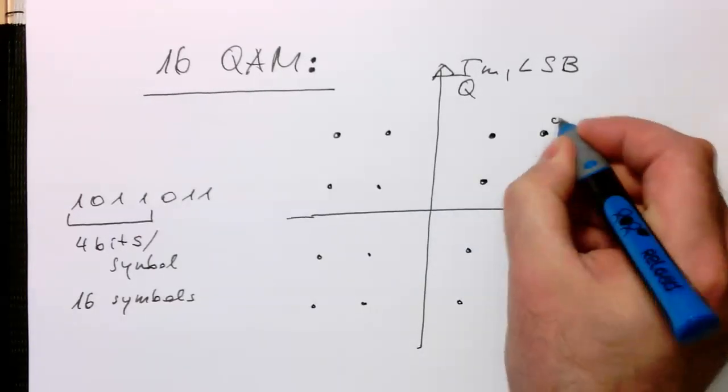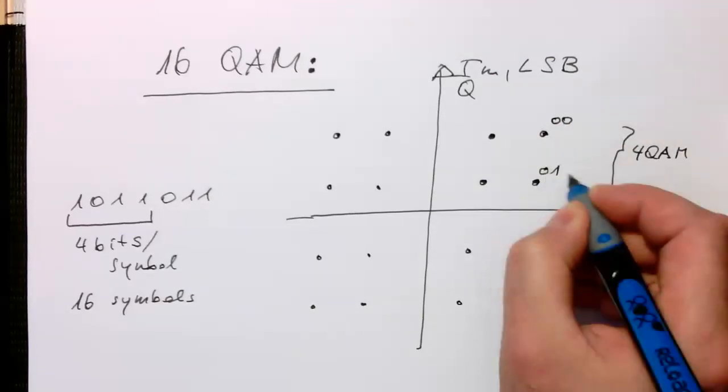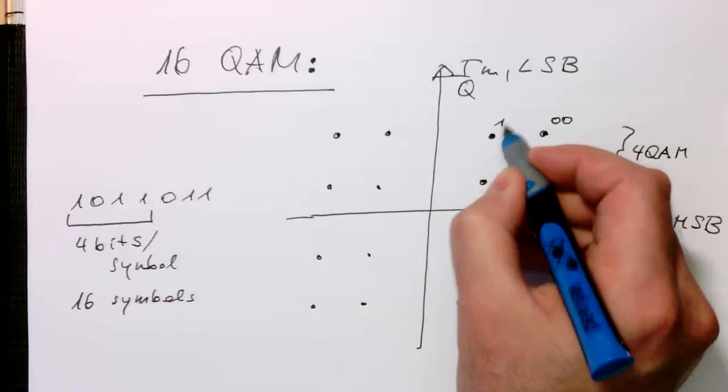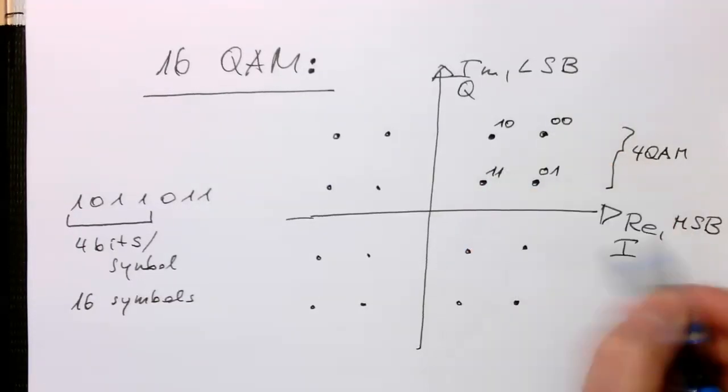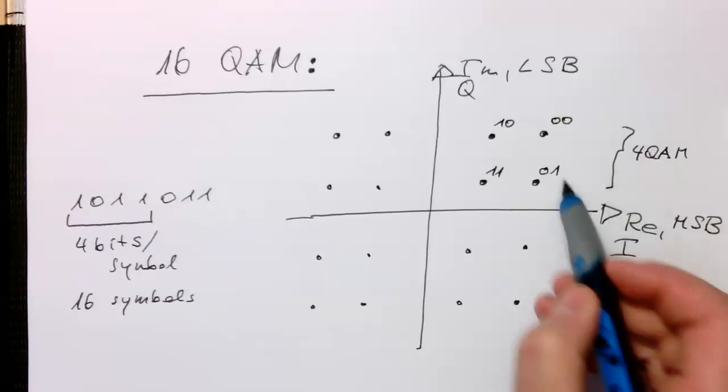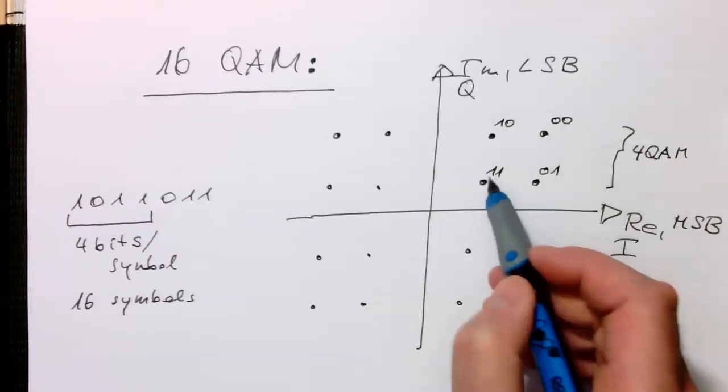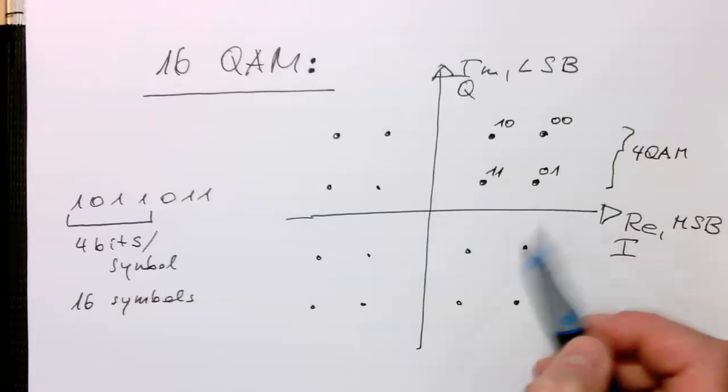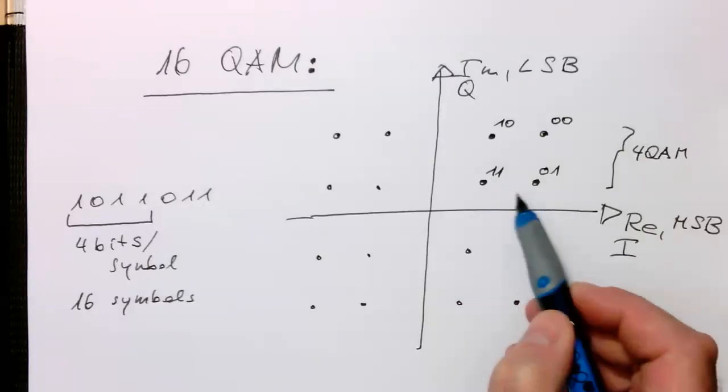So remember just to recap how these numbers, these bit numbers look like here. So that this is controlled by the LSB imaginary part and then the MSB controls basically if this one is flipping this bit.